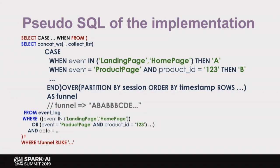Here's the CASE statement we use to build the actual string. For our first step, we chose two possible events — landing page and home page — and assign alias A if either happens. For the second step, we chose the event product page, but only if the user visits the page for product ID 123, and then assign it alias B. We use a window function because we want every row in the session to have the same complete string, so every row has the entire funnel string for further processing. This is actually a SELECT DISTINCT, so we get one row per alias per session.